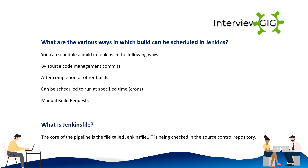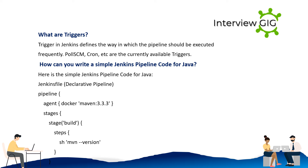What is a Jenkinsfile? The core of the pipeline is a file called Jenkinsfile, which is checked into the source control repository. What are triggers? Triggers in Jenkins define the way in which the pipeline should be executed. Poll SCM and cron are among the currently available triggers.